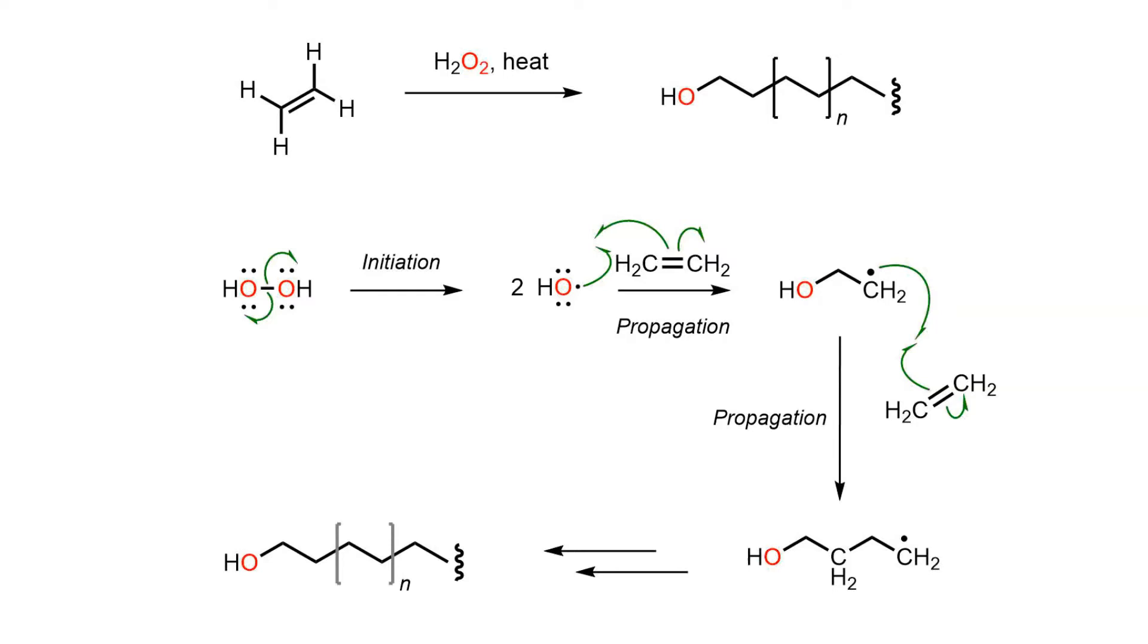When the mixture is heated up, the peroxide is broken into hydroxide radicals, which are very unstable.